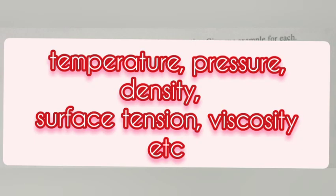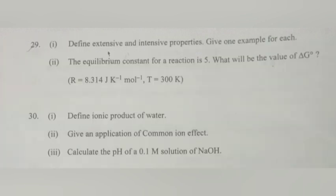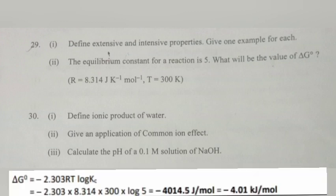Question 2: The equilibrium constant for a reaction is 5. What will be the value of delta G naught? Answer: Delta G naught equals minus 2.303 RT log Kc, equals 2.303 times 8.314 times 300 times log 5.